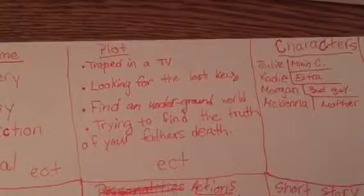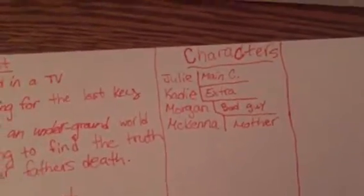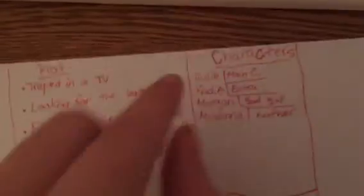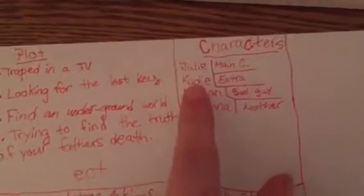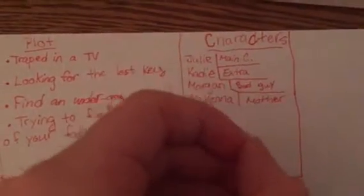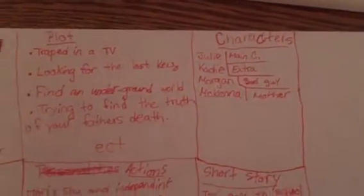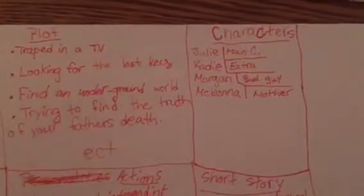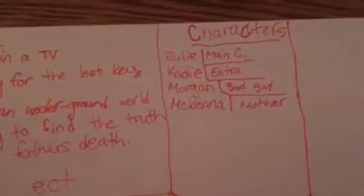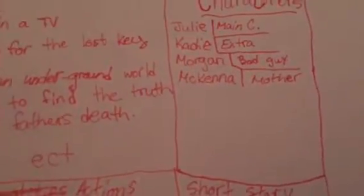Then you have to find your characters. For example, I just chose four dolls, but you should have like seven or eight. You label them by role — so let's say you want a doll to be the main character. Katie could be an extra, which is someone in the background as a classmate or someone on the street. Morgan is the bad guy and McKenna is the mother.